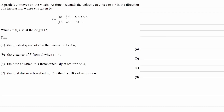A particle P moves on the x-axis. At time t seconds, the velocity of P is v in the direction of x increasing, where v is given by a piecewise function. There are two parts: when t is between 0 and 4, and when t is greater than 4. When t is equal to 0, P is at the origin. We're trying to find the greatest speed of P in the interval 0 to 4 seconds, so we're just considering that part of the function.